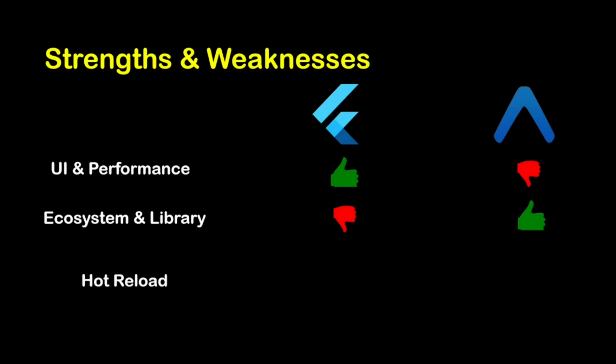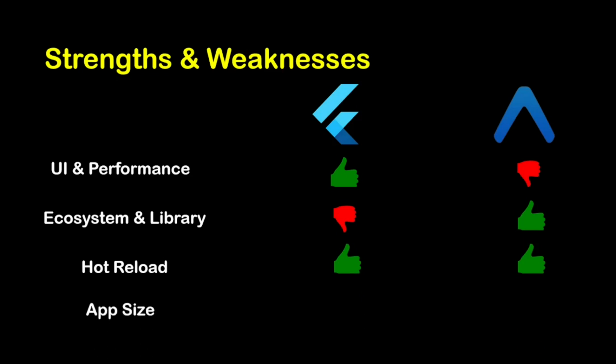On hot reload and development speed, both frameworks support hot reloading, which allows developers to quickly see changes without restarting the entire app. On app size, Flutter apps tend to have a larger binary size due to the custom engine and libraries bundled with the app. Expo apps can be a bit larger than pure React Native apps as Expo includes all the dependencies; however, there are tools that help control app size by excluding unnecessary modules.